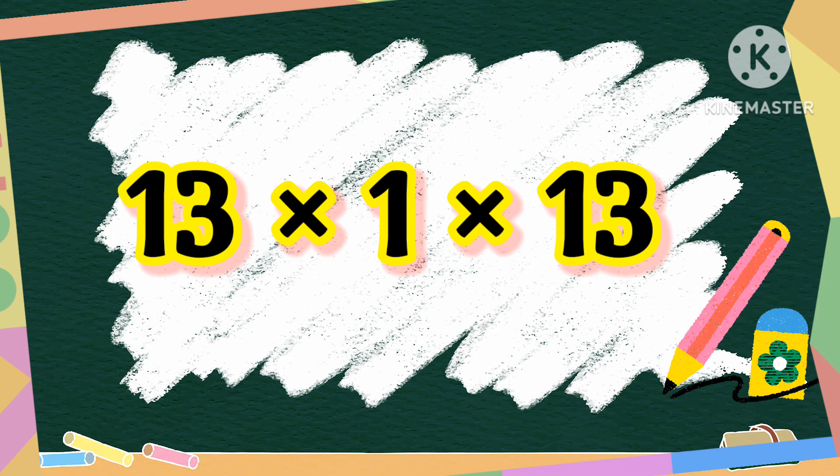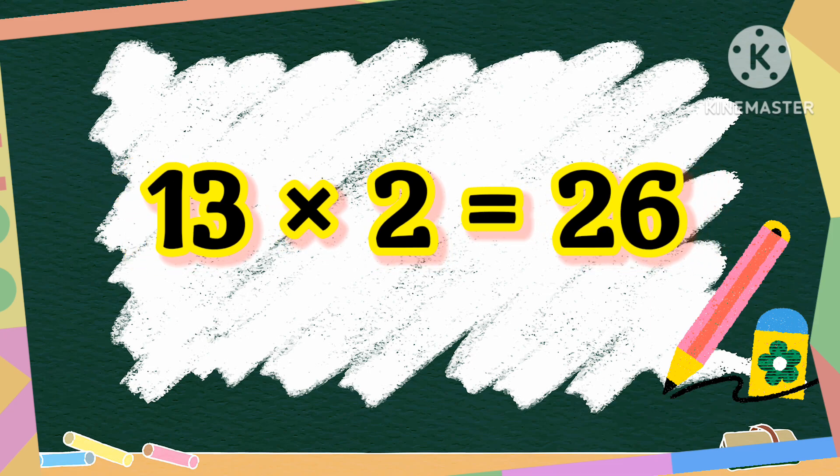13 ones are 13. 13 ones are 13. Kids, read after me. 13 twos are 26. 13 twos are 26.